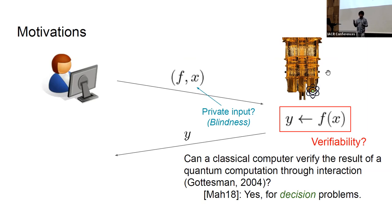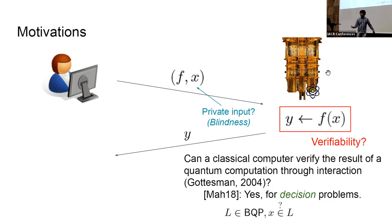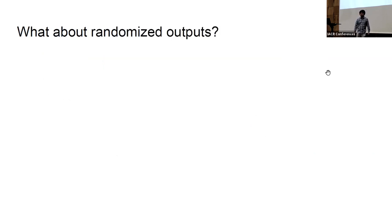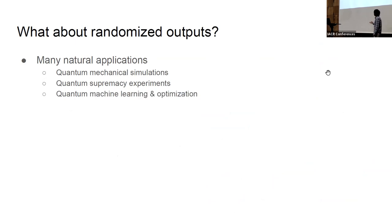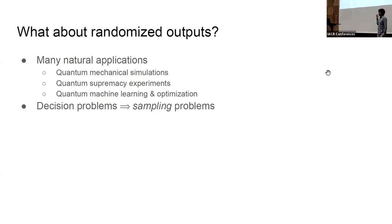Is that the end of the story? Decision problems ask: given a BQP language and instance X, is it a yes-instance or no-instance? This has a deterministic correct answer. But the natural next question is: what about randomized outputs? A lot of quantum algorithms studied today actually do have randomized outputs — for example, quantum mechanical simulations, quantum supremacy experiments, random circuits, and quantum machine learning and optimization algorithms. So we propose to consider the classical verification of quantum sampling problems.